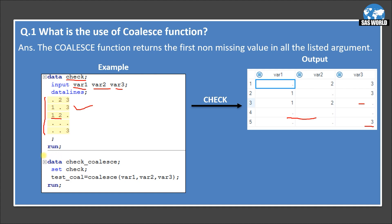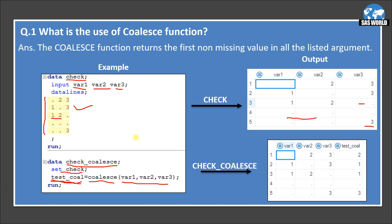In the next data step, I'm using the COALESCE function to find the first non-missing value across all three variables. I'm creating a dataset named 'check_coals', copying all values from the 'check' dataset, and creating a variable 'test_call'. This variable will hold the first non-missing value among variable one, variable two, and variable three. In the first observation, variable one is missing but variable two is two, so that is the first non-missing value — that's why test_call has value two.